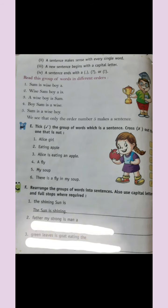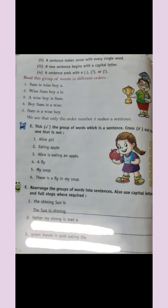Let's read these things to understand better. Children, see here — in this picture, a child has a trophy in his hand. Think about why he has a trophy — because he is a very wise boy. So children, tell me which sentence is correct: one — 'Sam is wise, a boy, boy, a'; two — 'wise Sam boy, a, is'; three — 'a wise boy is Sam'; four — 'a boy Sam is a wise'; five — 'Sam is a wise boy'.